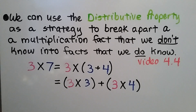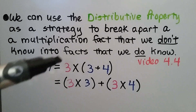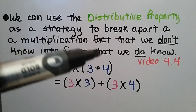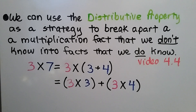We can use the distributive property as a strategy to break apart a multiplication fact that we don't know into facts that we do know. 3 times 7 is equal to 3 times (3 plus 4). We broke the 7 into a 3 plus 4. We distribute the 4 to this 3 and then to the 4 with the addition sign in between them. So it's equal to 3 times 3 plus 3 times 4, which might be easier to solve.